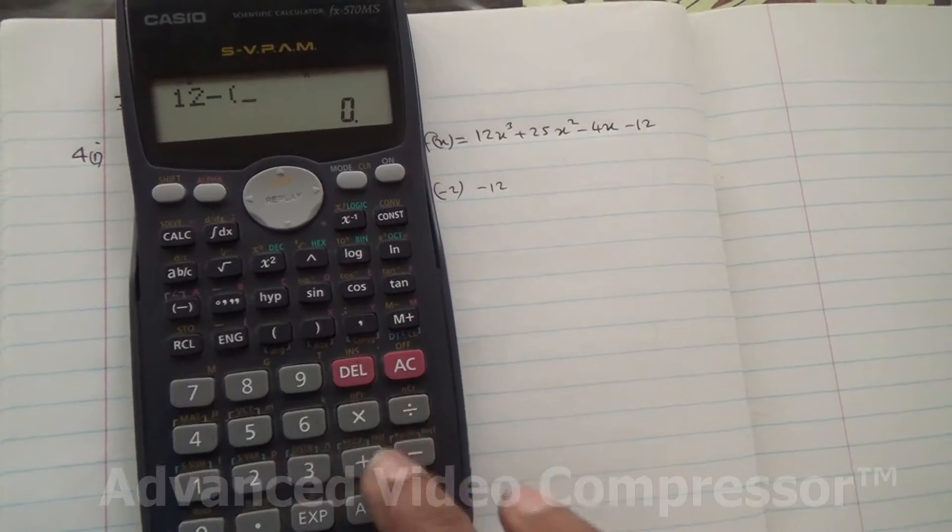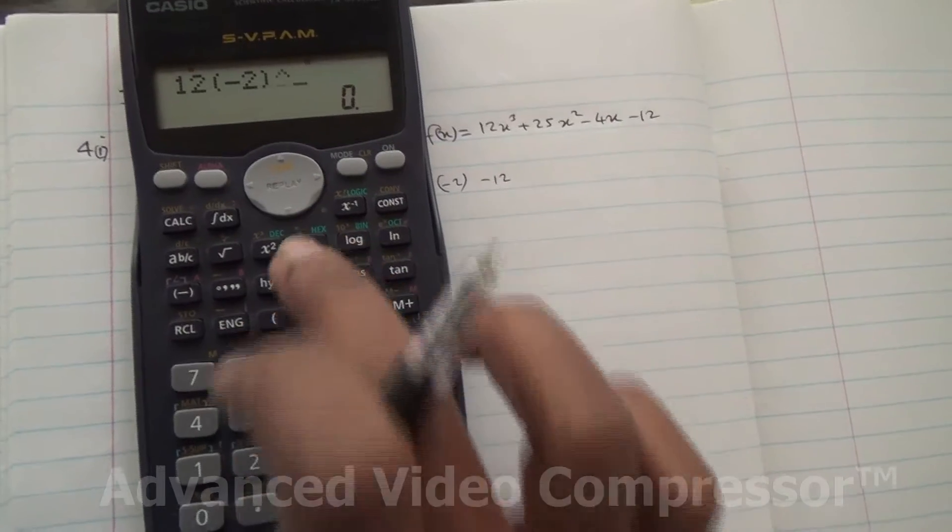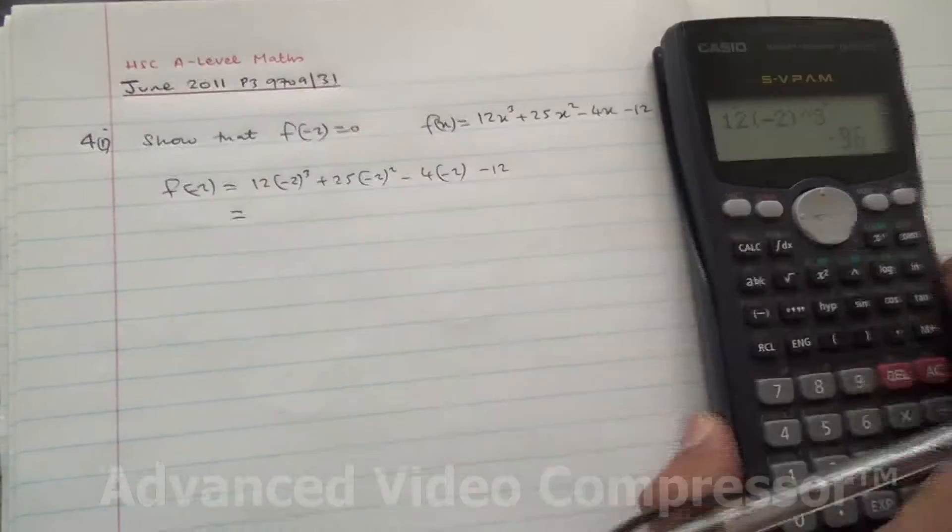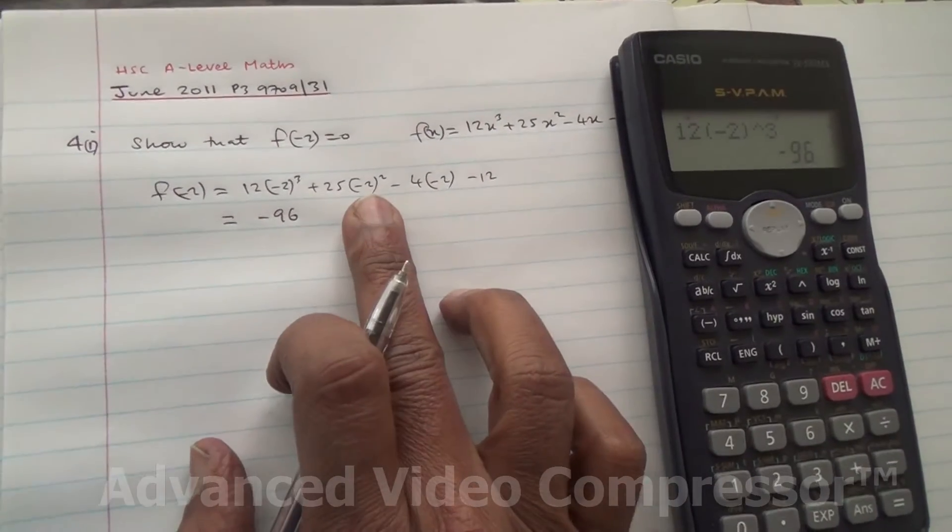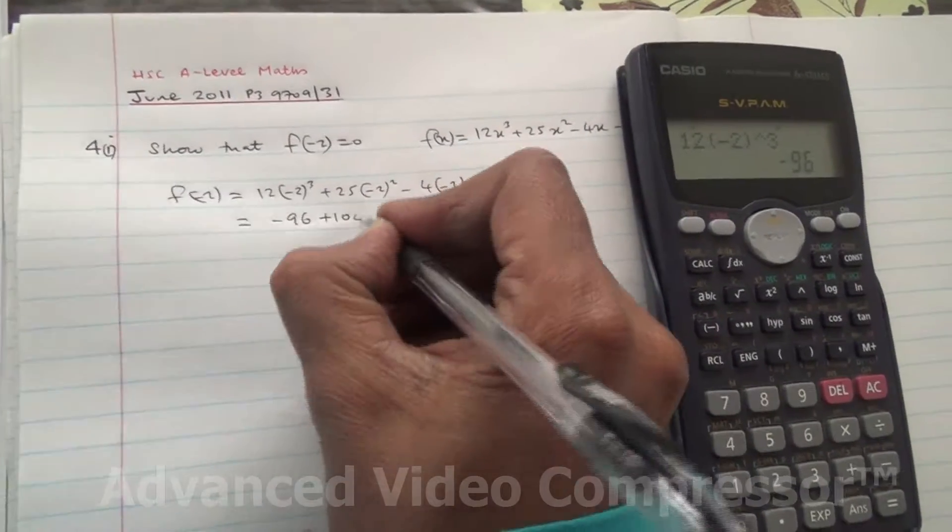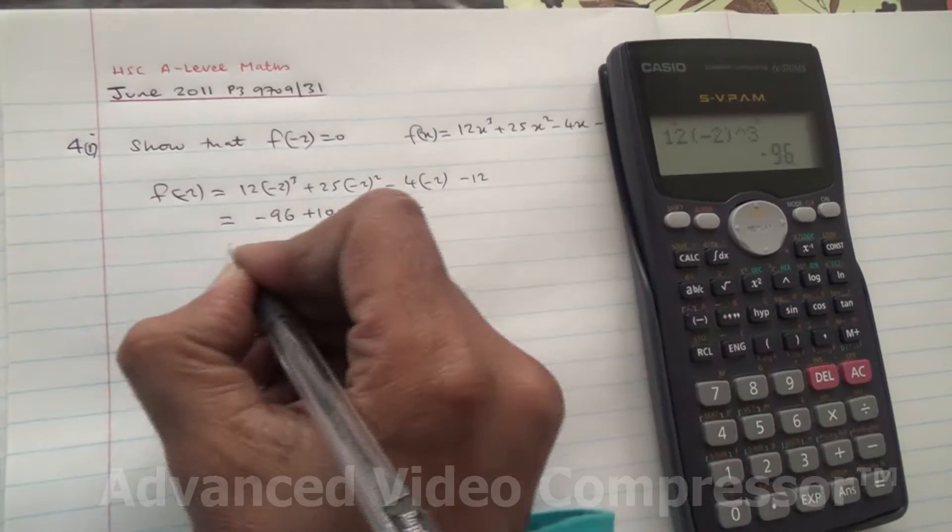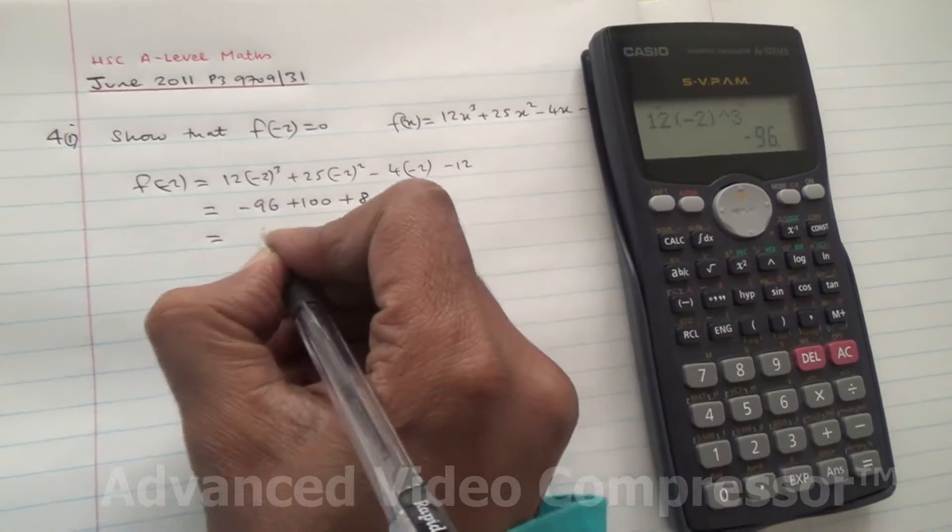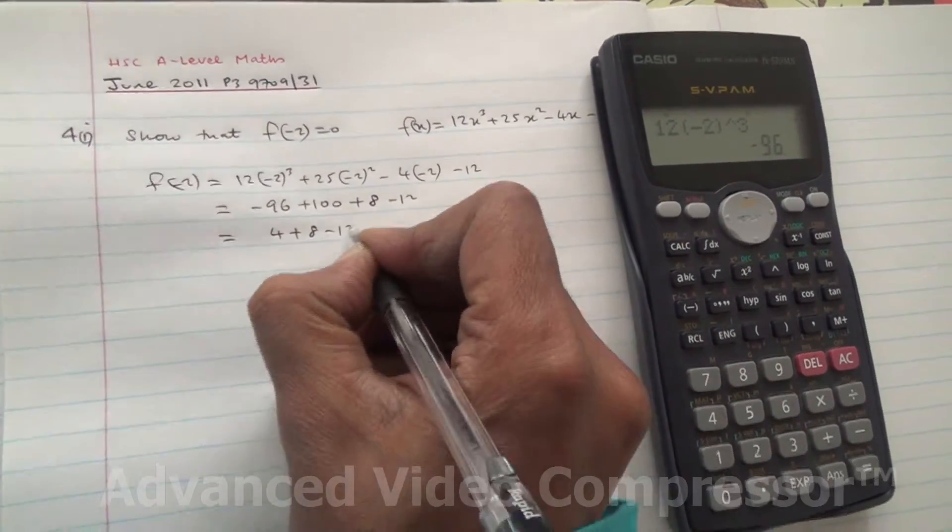12 times (-2) to the cube is going to give us -96. Also, 25 times (-2) to the square is 4 times 25 is 100. Then minus times minus becomes positive. We have 8 minus 12. So -96 plus 100 is 4 plus 8 minus 12.